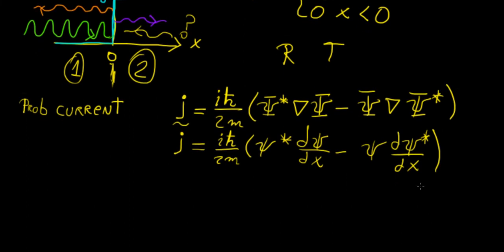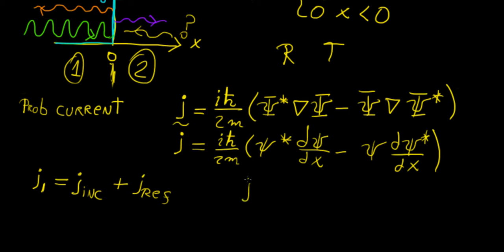Now we're going to establish the following property. We know that we're going to have a current density for each of these two regions. So we're going to have current density in region 1, which is going to be equal to the sum of the incident current density and the reflected current density. In the second region, we just have a single transmitted current density. By conservation laws, j1 must equal j2, because what we're conserving here is the probability.